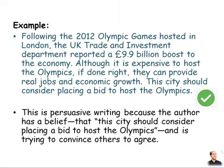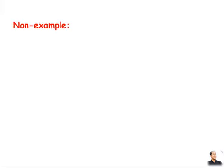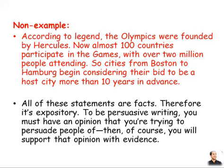Here is an example: 'Following the 2012 Olympic Games hosted in London, the UK Trade and Investment Department reported a 9.9 billion boost to the economy. Although it's expensive to hold the Olympics, if done right, they can provide real jobs and economic growth. The city should consider placing a bid to hold the Olympics.' This is persuasive writing because the author has a belief that the city should consider placing a bid to hold the Olympics and is trying to convince others to agree. But this is not a correct example: 'According to legend, the Olympics were founded by Hercules. Now almost 100 countries participate in the games with over 2 million people attending.' All of these statements are facts. Therefore, it's expository. To be persuasive writing, you must have an opinion that you're trying to persuade people of, and then you support that opinion with evidence.